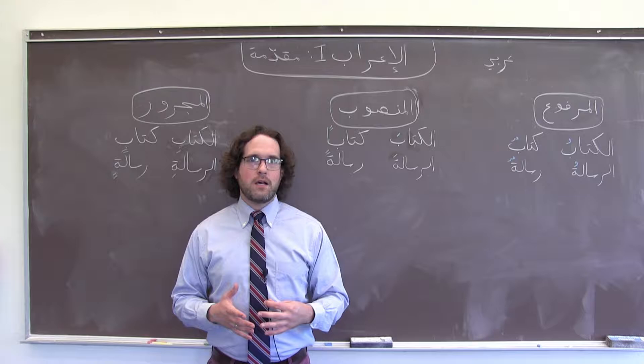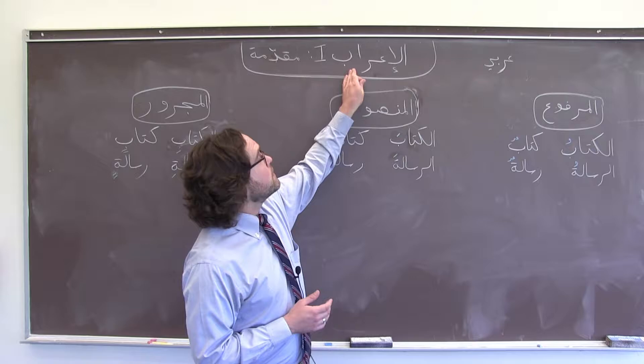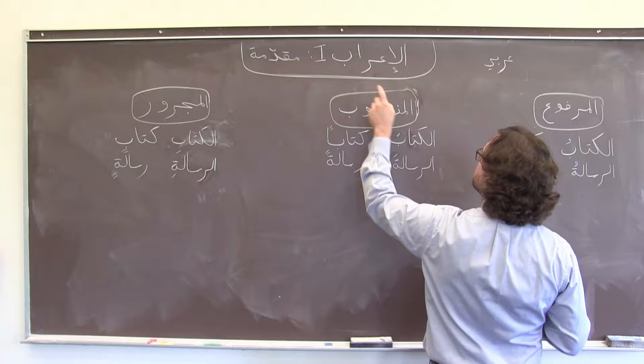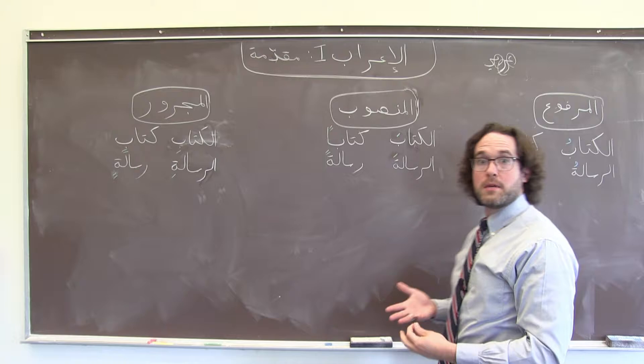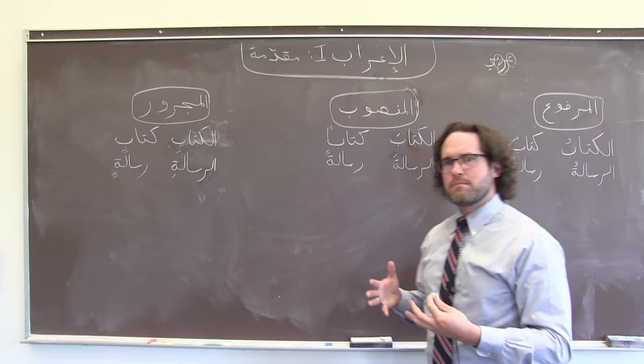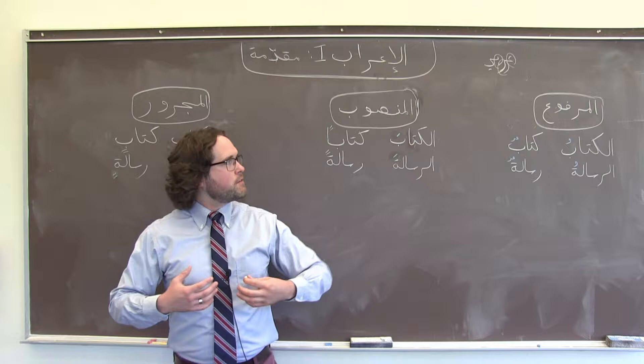Right now we're going to talk about case endings on nouns in Arabic, what we call in Arabic الإعراب. You'll notice that إعراب, as a word, is a مصدر that comes from the same جذر as the word for Arabic in Arabic — عربي, العربية. It's really no exaggeration to say that الإعراب means making something into proper Arabic.